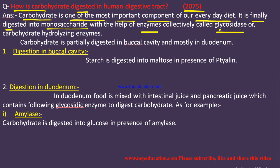To break the glycosidic bond, enzymes called glycosidases are used. As a hint about enzyme nomenclature: the enzyme is named after its substrate — the nutrient it digests. Since it breaks the glycosidic bond, it is called glycosidase, also known as carbohydrate-hydrolyzing enzymes.